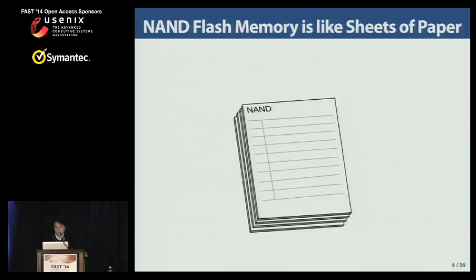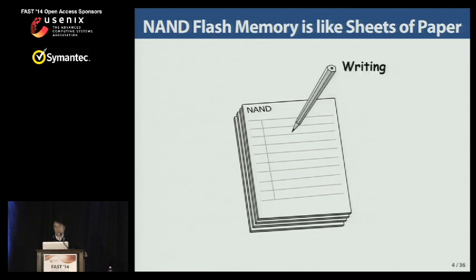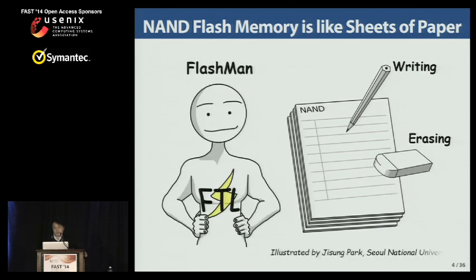Most system researchers are not familiar with low-level device behaviors, so I will describe the key idea of our cross-layer approach using a simple cartoon called FlashMan, which represents our flagship FTL layer. NAND flash memory is like sheets of paper. A program operation in a NAND device can be thought of as writing with a pencil, and an erase operation as erasing with an eraser. Let me introduce FlashMan, who writes letters and erases paper.